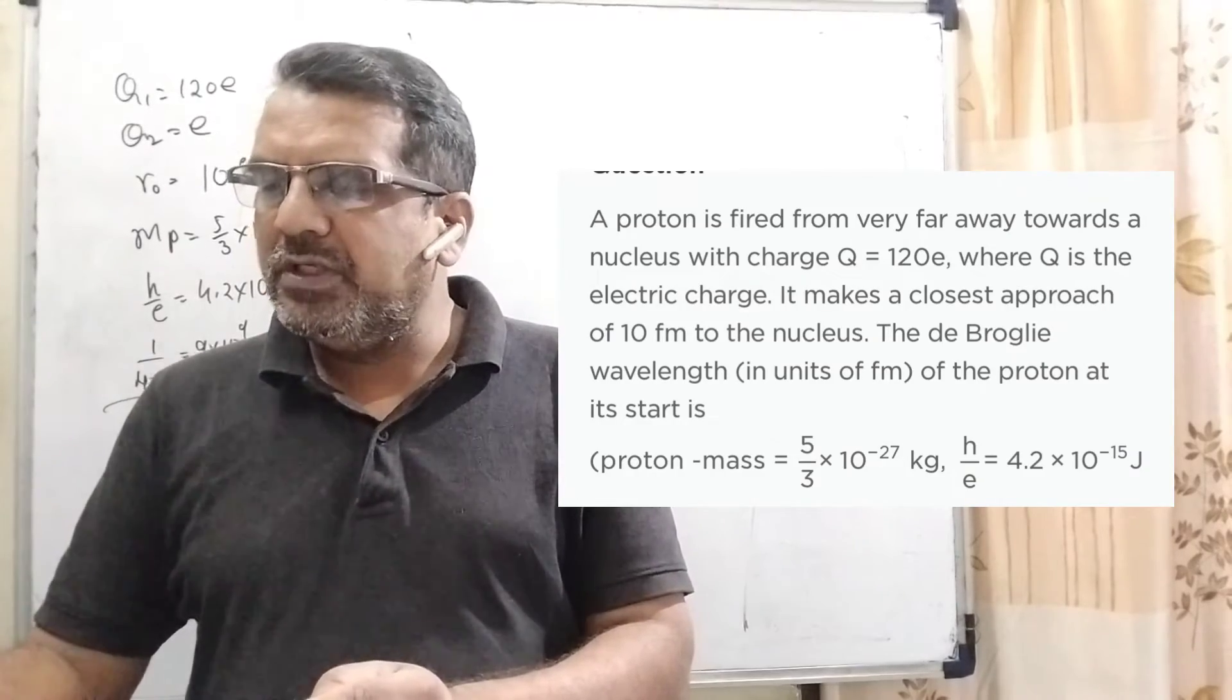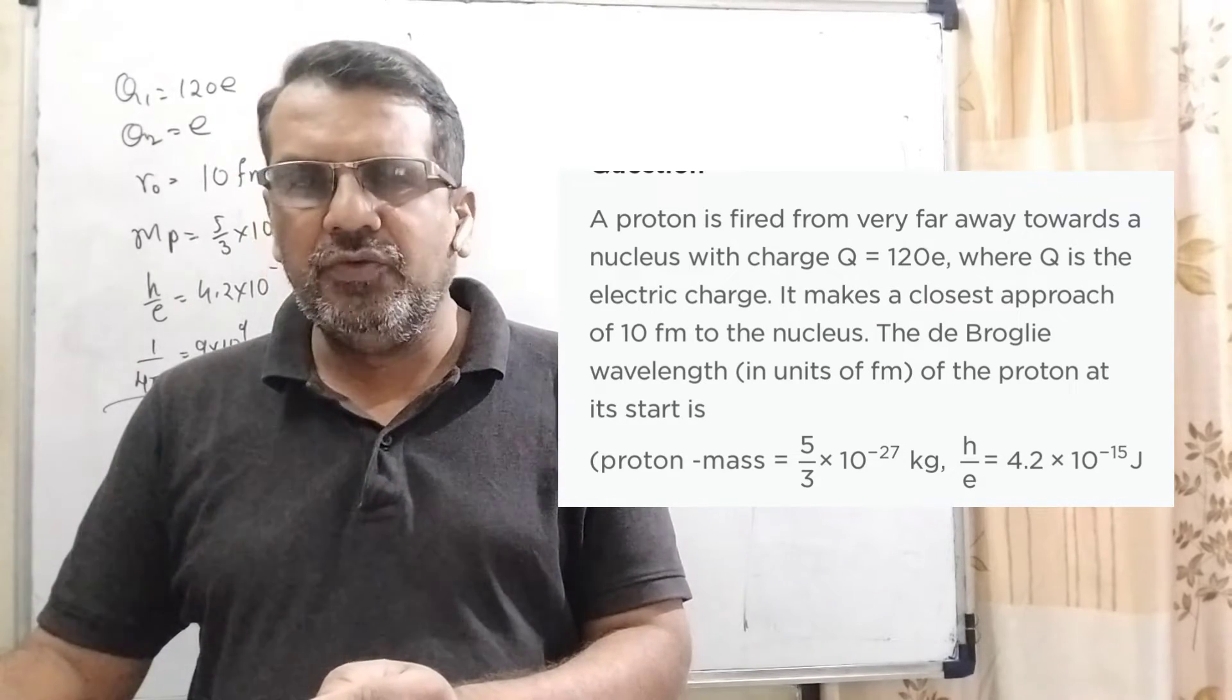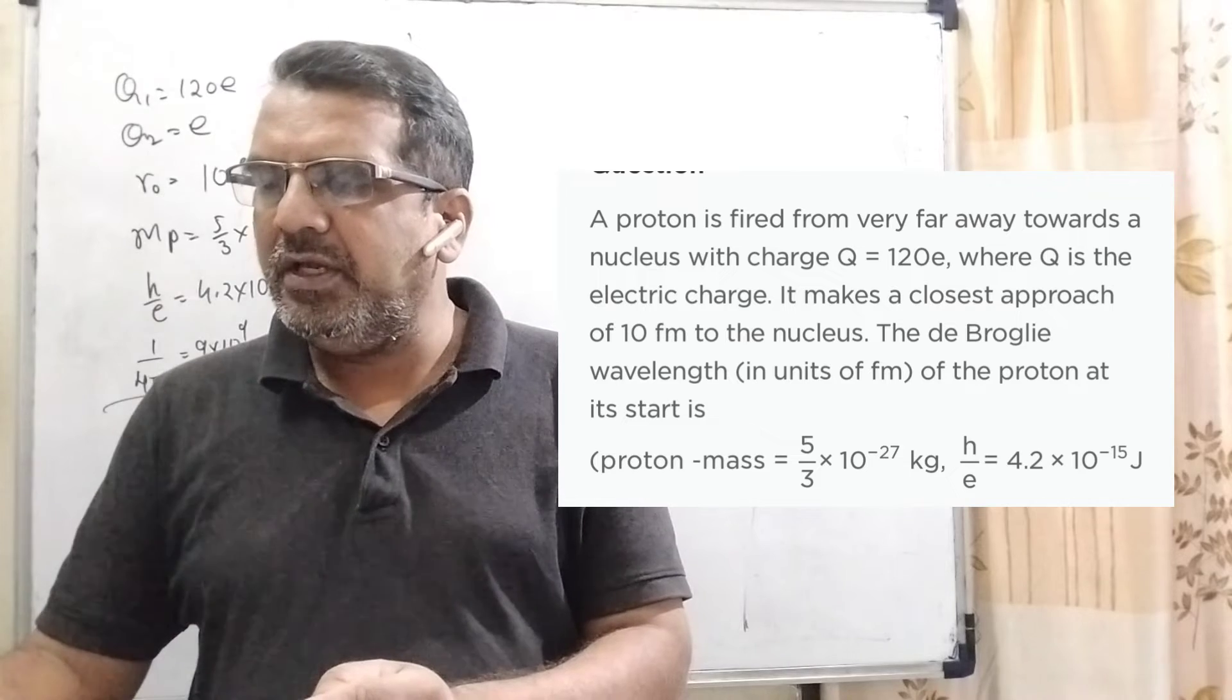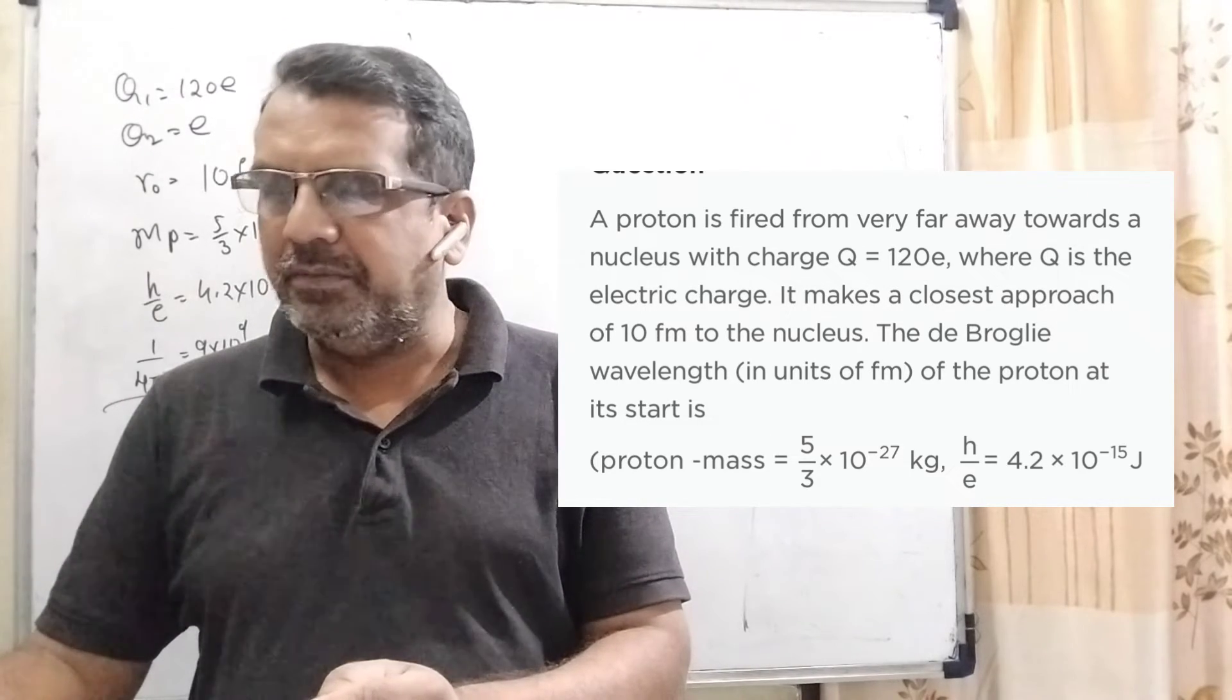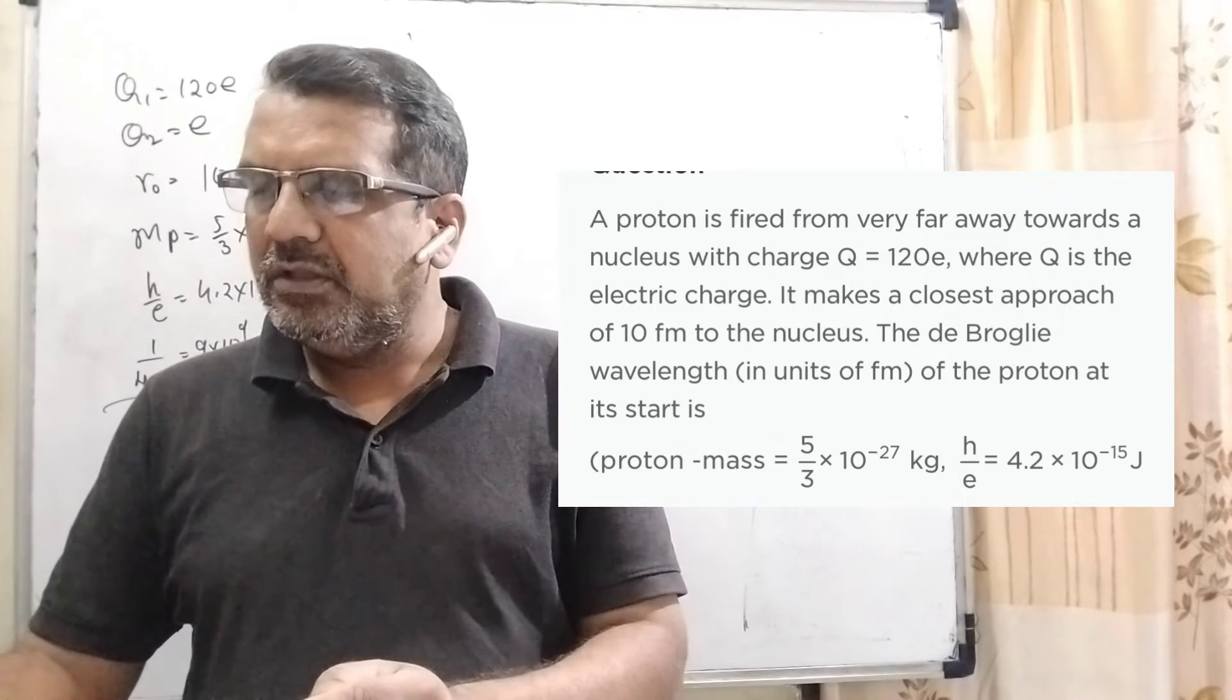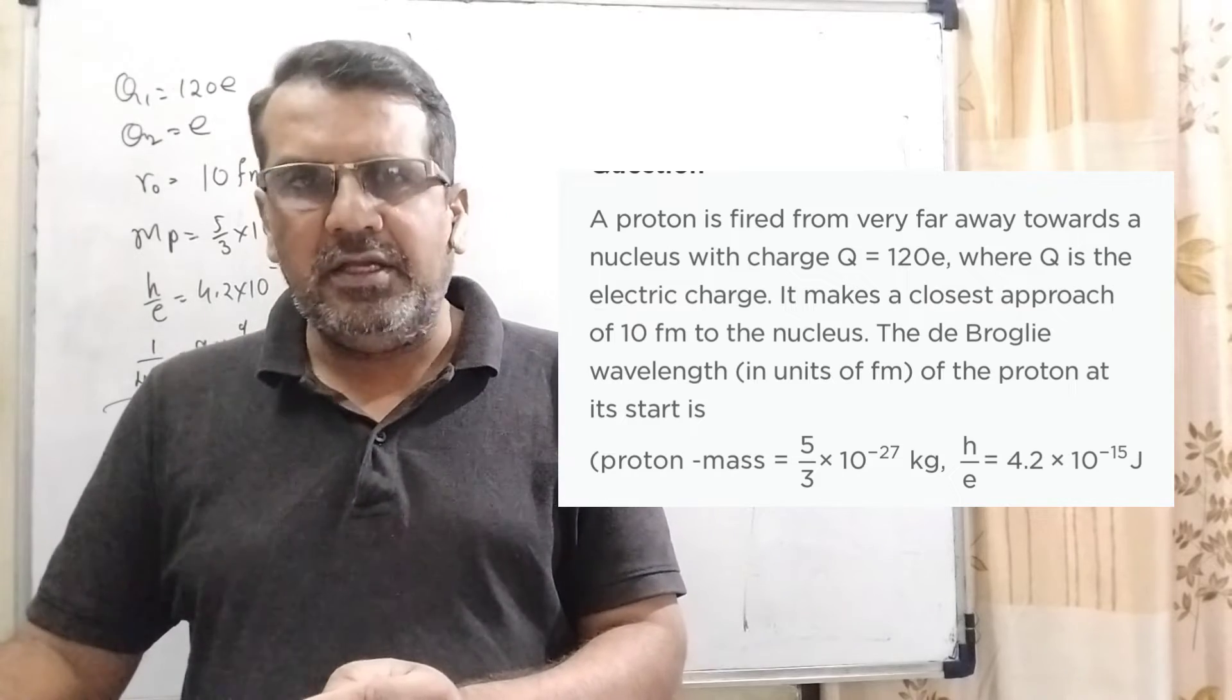Now here is the question. A proton is fired from very far away towards a nucleus with charge Q equal to 120e, where e is the electronic charge. It makes a closest approach of 10 Fermi to the nucleus. The de Broglie wavelength in Fermi units of the proton at its start is: